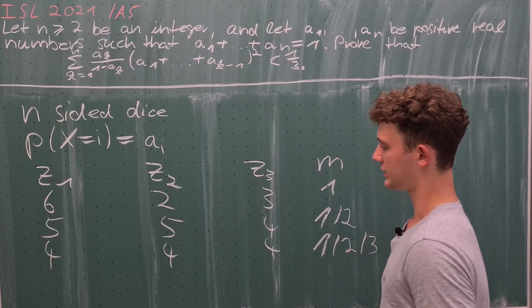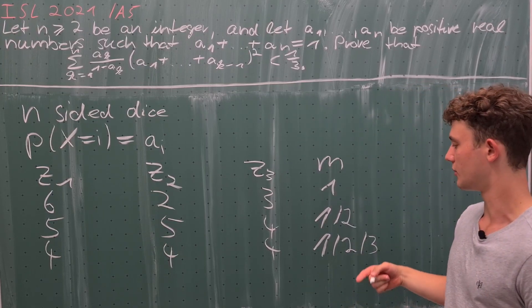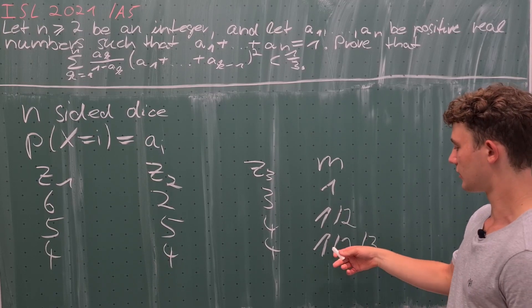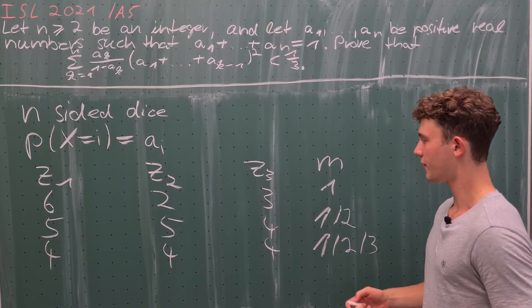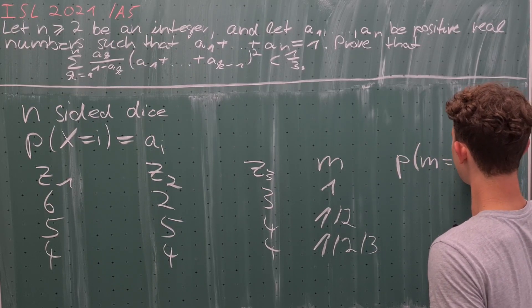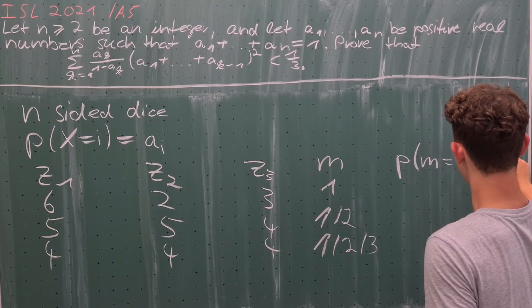This problem is now entirely symmetric between one, two, and three, and the outcome is always one of these numbers as well. Therefore, the probability of getting the number m equals one is exactly one third.